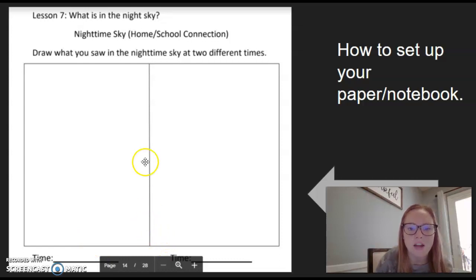And then I want you to go out at a different time. Maybe you go out at 10 p.m. So over here for the time you would write 10 p.m. and you would draw a picture of what you see at 10 p.m.